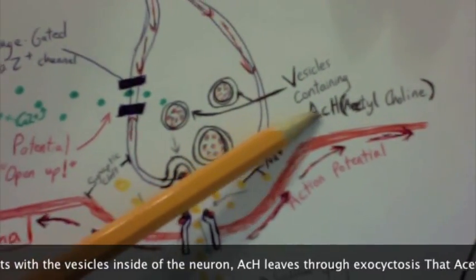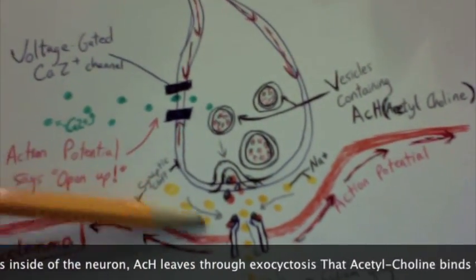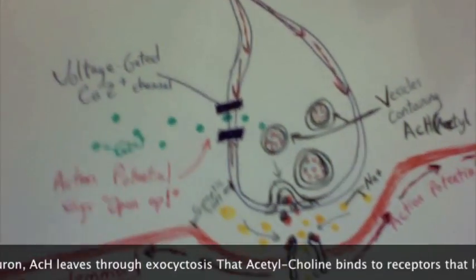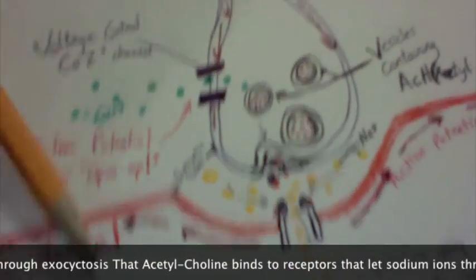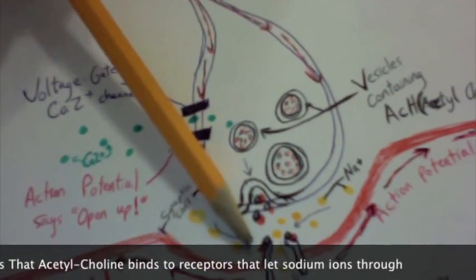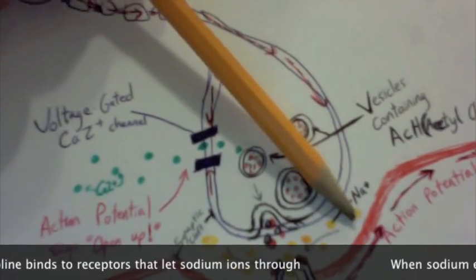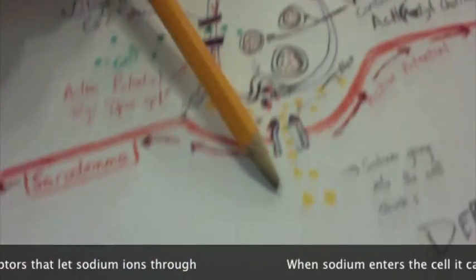The ACH leads to exocytosis of acetylcholine, which finds receptors that allow sodium ions through.